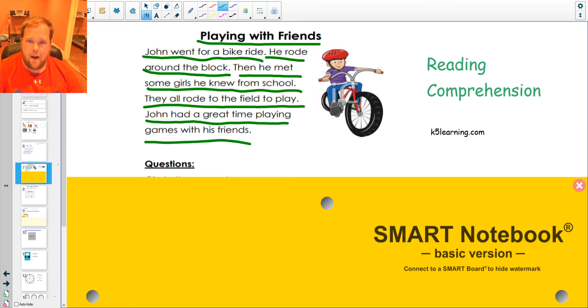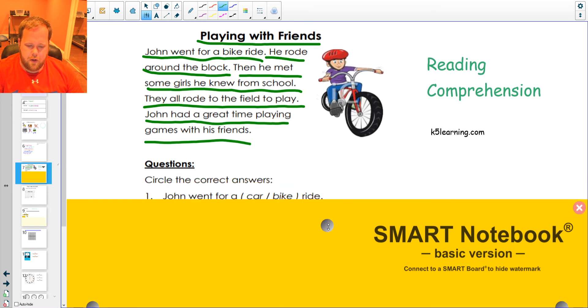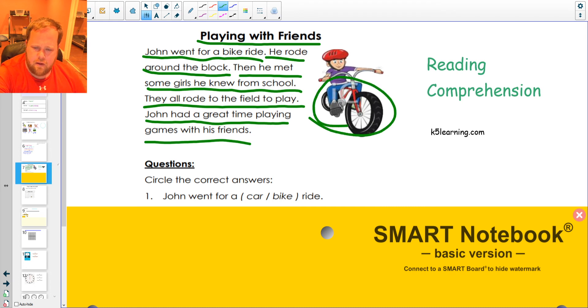Wow, I am jealous! I would love to go play games with my friends. So let's look at the questions. Circle the correct answers. John went for a car or bike ride. Ready? Say, what did he go for, a car or bike ride? Say it in three, two, one: bike ride! Absolutely, this thing is a bike. So proud! For a bike ride.